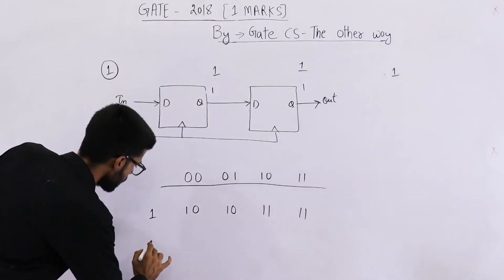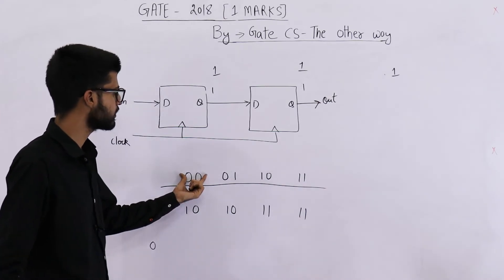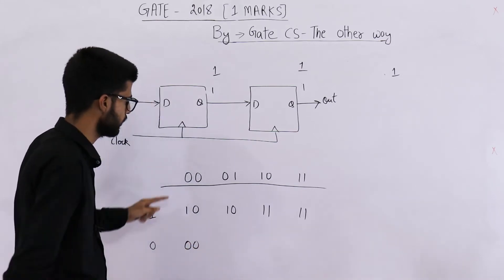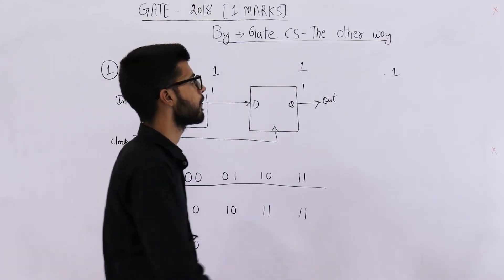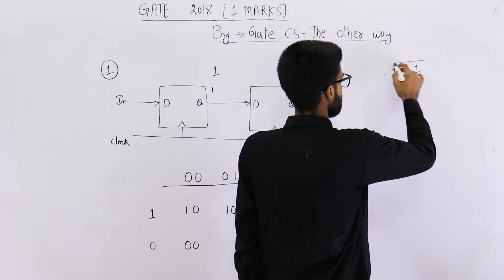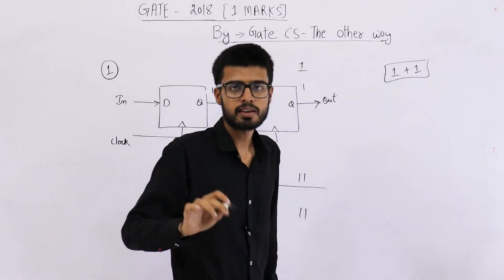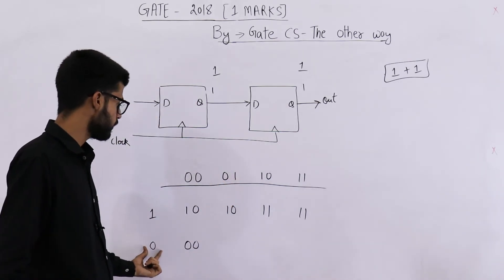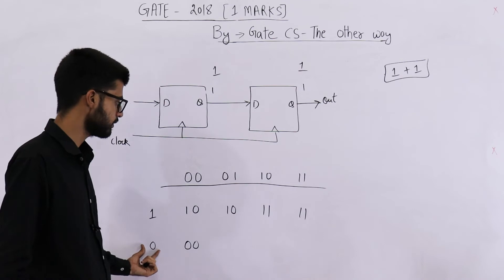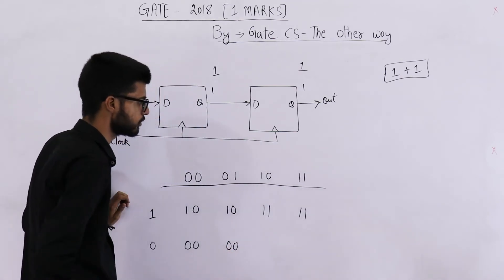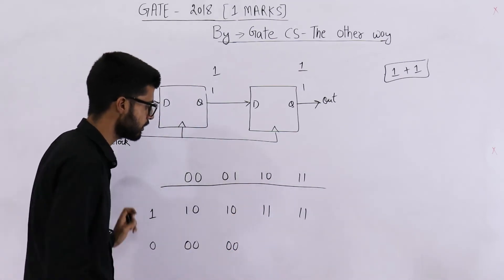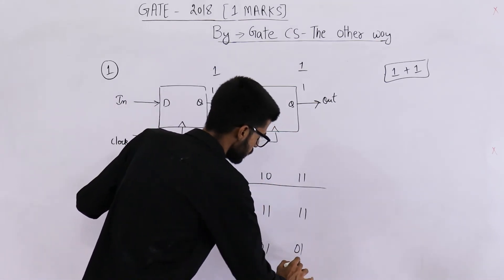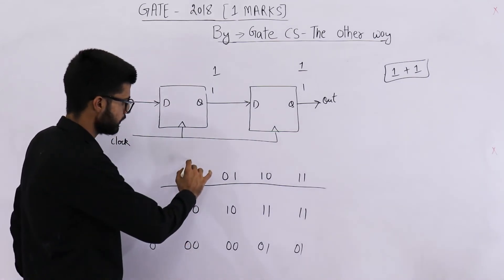First case is this. Now you can easily guess when value of in is 0, on state 0, 0, the output or next state will also be 0, 0. So next case is this. When current state is 0, 1 and value is 0, in is 0. In this case new state is going to be 0, 0. In this case new state is going to be 0, 1. In this case also new state is going to be 0, 1 only. So one case is this.